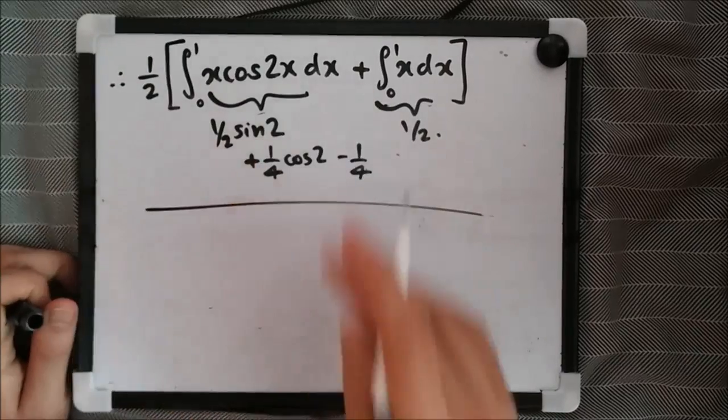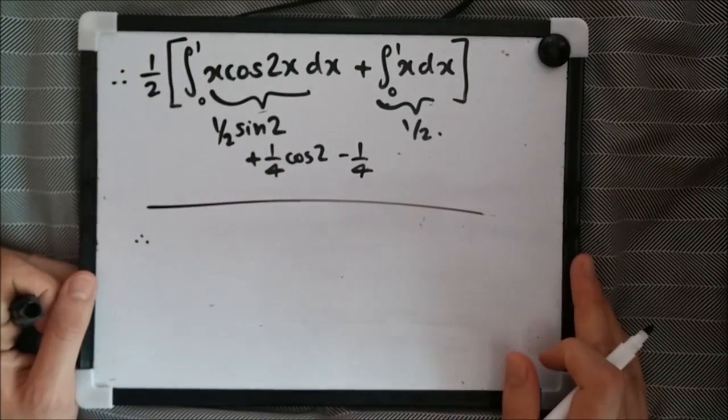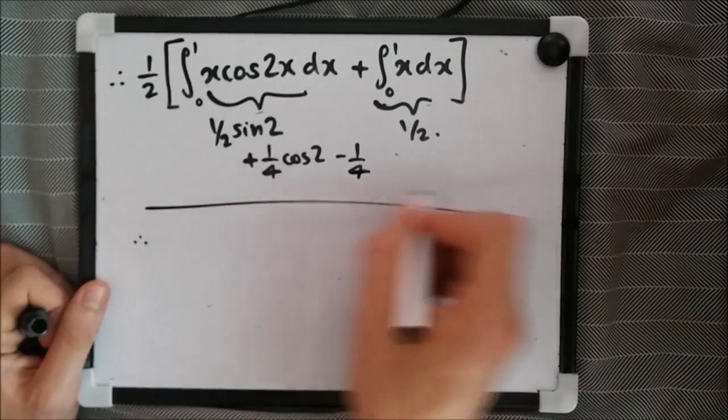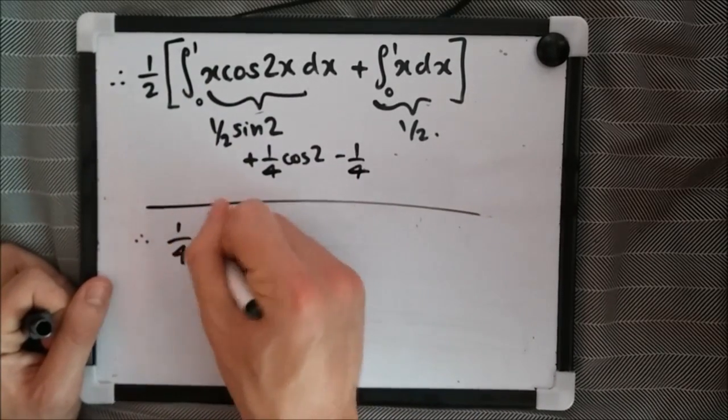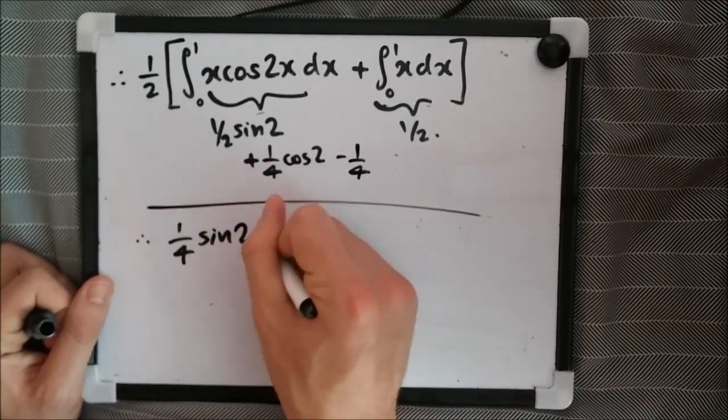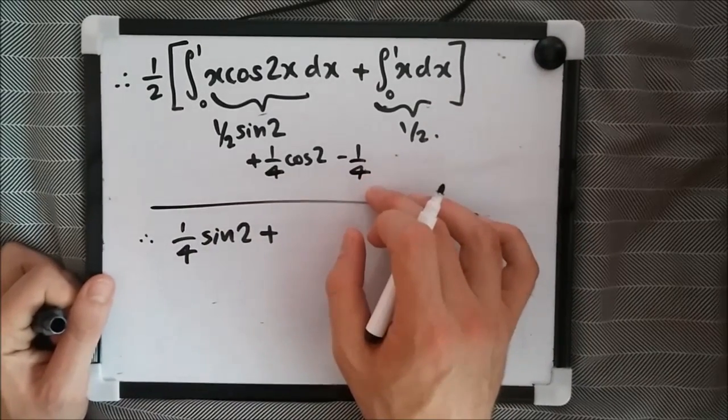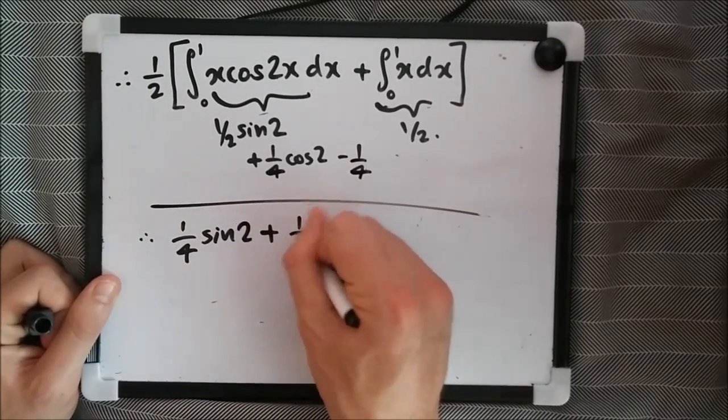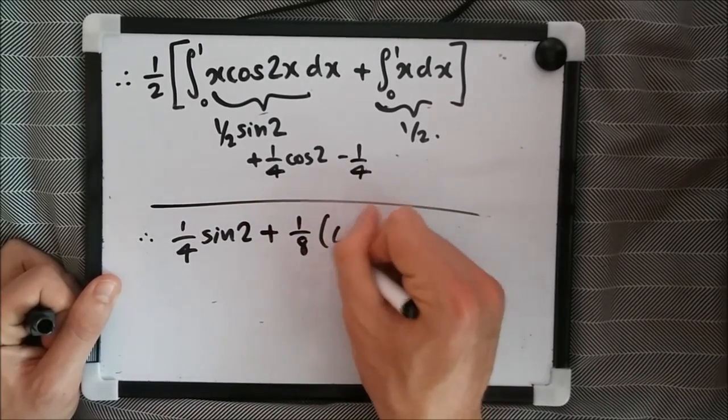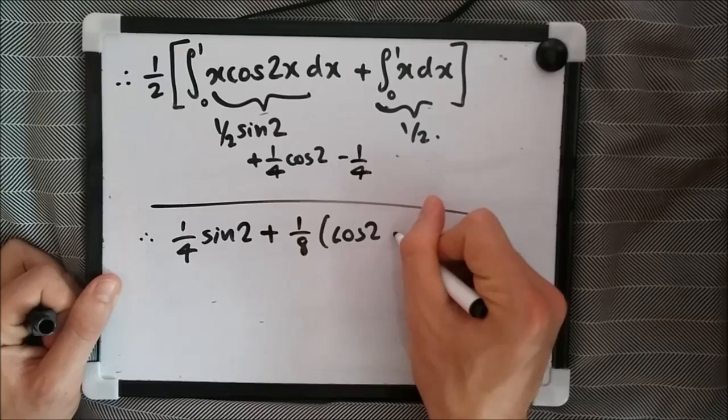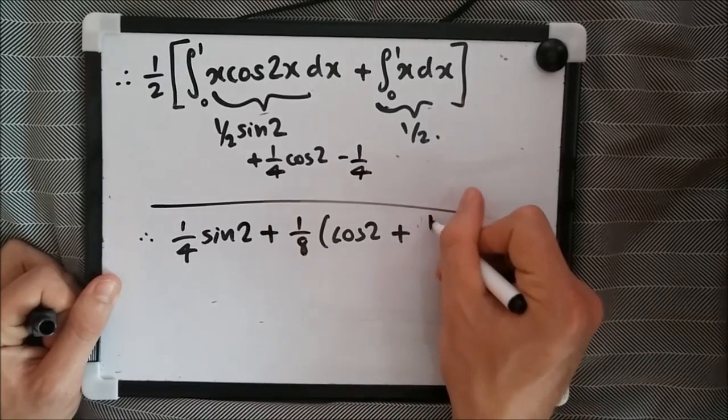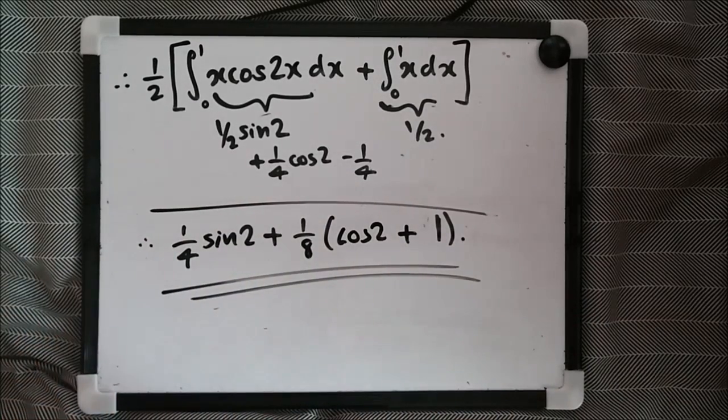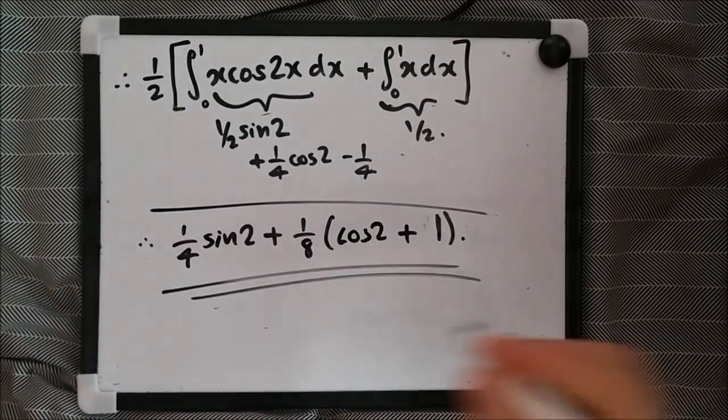Ultimately, the solution for this part, what I really just did is summarize the solutions for the integral of this term, which gave us half sine 2 plus quarter cos 2 minus a quarter. And of course, the integral from 0 to 1 of x is going to be half. Hence, multiplying everything by half and simplifying, we should get half times all this term. Eighth cos 2 plus 1. And that's it, guys. This is how you find the integral of x cos squared x dx with limits.